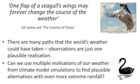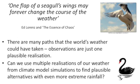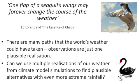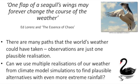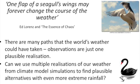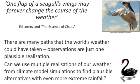We took advantage of the fact that we have very large sets of simulations. Going back to the famous quote by Ed Lorenz and the essence of chaos — that one flap of a seagull's wings may forever change the course of the weather — that is the basis of ensemble forecasting. It also tells us that there are many paths the world's weather could have taken over past years and decades, and observations are just one plausible realisation of that path.